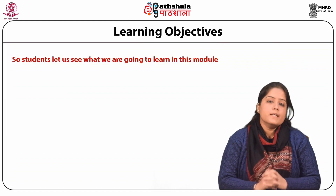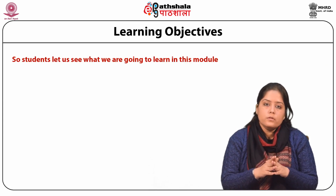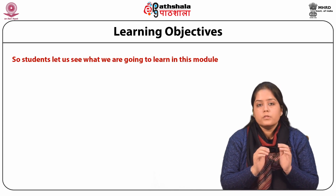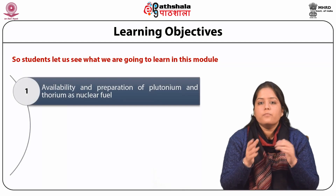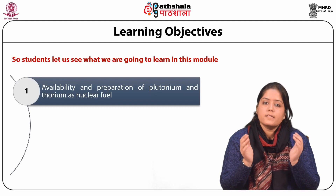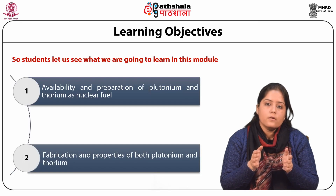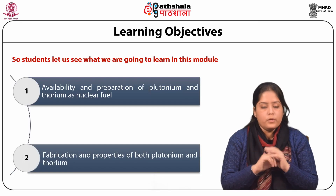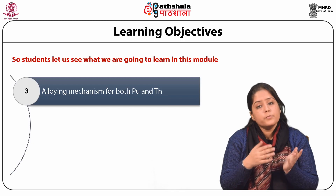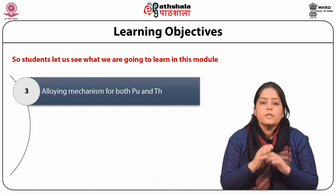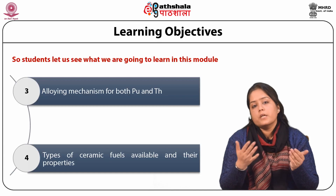Let us see what we are going to learn in this module. First, availability and preparation of plutonium and thorium as nuclear fuel. Second, fabrication and properties of both plutonium and thorium. Third, alloying mechanism for both plutonium and thorium. Lastly, different types of ceramic fuels available and their properties.